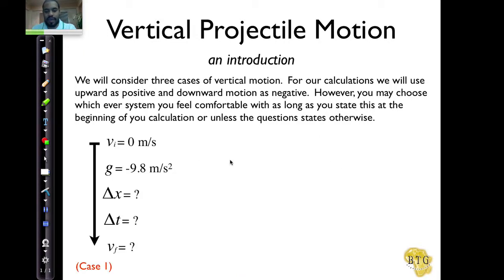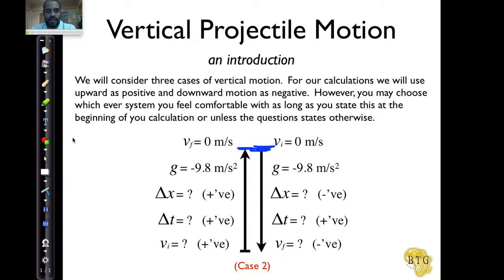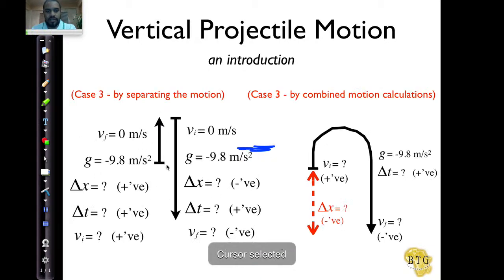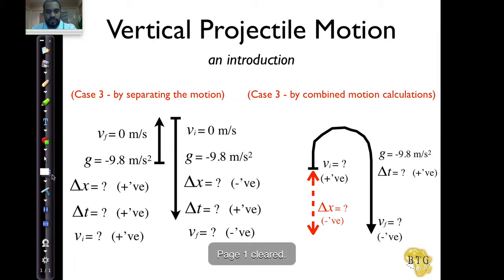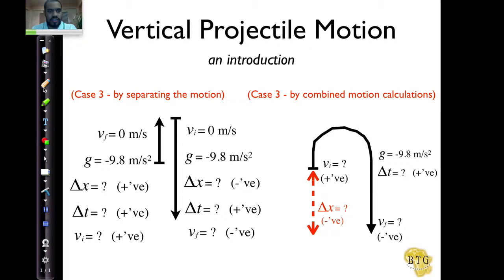Case 2 is where we throw up from a reference point, it goes up to a maximum height, and then it comes back to the exact same height. So it goes up from here, then it goes to maximum height, and then from that height it comes down again in the exact same straight line.